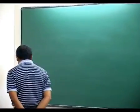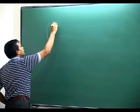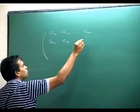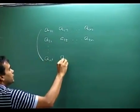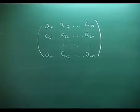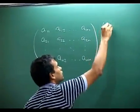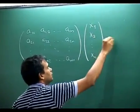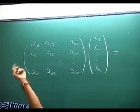Let us try to understand what a matrix is geometrically speaking. If you have a square matrix, you can also think of it as a transformation: for a vector x1, x2, ..., xn, the matrix transforms it to a new vector given by matrix multiplication.